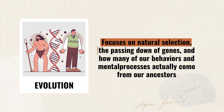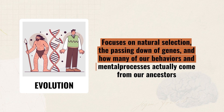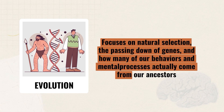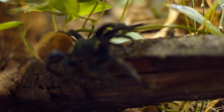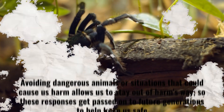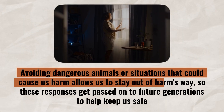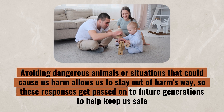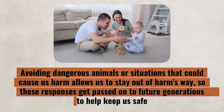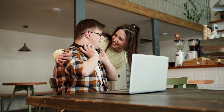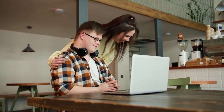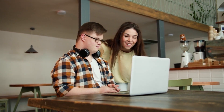We could look at this question through the evolutionary perspective, which focuses on natural selection, the passing down of genes, and how many of our behaviors and mental processes actually come from our ancestors. For instance, many of our fear responses — such as the fear of heights or spiders — may come from our past. Avoiding dangerous animals or situations that could cause us harm allows us to stay out of harm's way, so these responses get passed on to future generations.